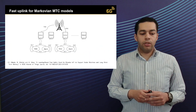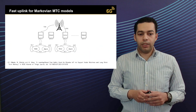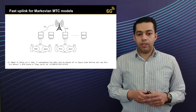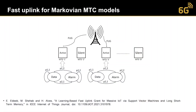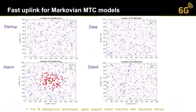In this context, we published a journal paper on fast uplink grant for Markovian MTC models, published in the IEEE IoT Journal. In this paper, we consider multiple Markovian events that control the activation of machine type devices, and these Markovian events go from the alarm to the data states according to a Markov chain.